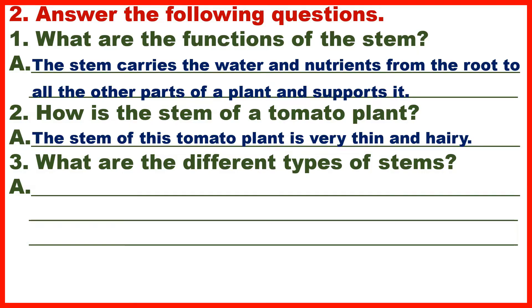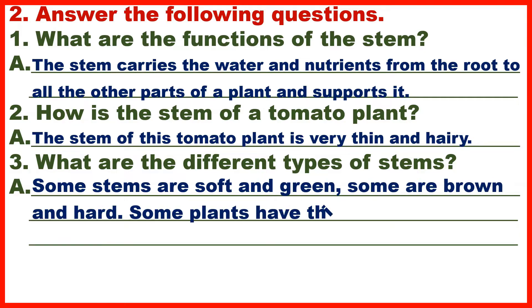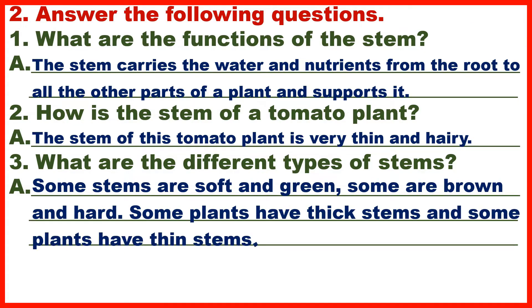Question 3: What are the different types of stems? Answer: Some stems are soft and green, some are brown and hard. Some plants have thick stems and some plants have thin stems.